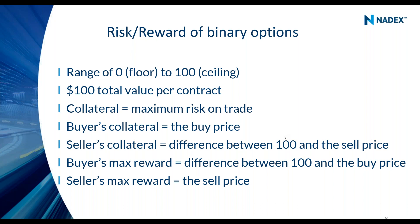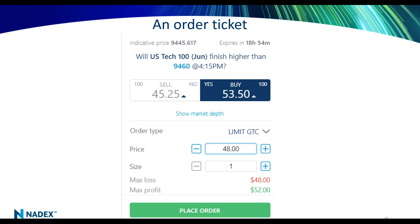The maximum reward for a buyer is 100 minus my buy price, because I bought it and it goes to 100. We do all of this math for you on the order ticket. On an order ticket, here's my condition: will the U.S. Tech 100 — that's the NASDAQ — be higher than 94.60 at 4:15 p.m.? You're going to have two prices: a bid price where you could sell it, and an offer price where you could buy it. If I think it's going to go lower, I see a price I can sell it for — 45.25. If I think yes, I have a buy price: I can buy it for 53.50.